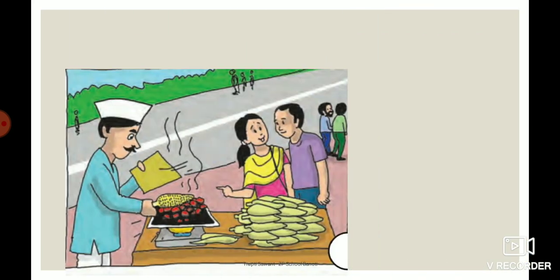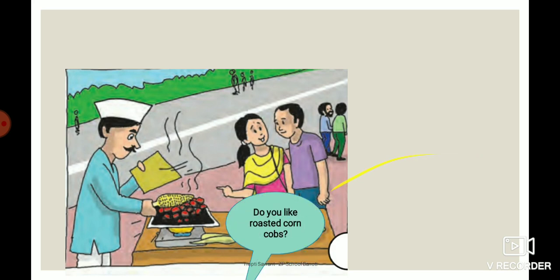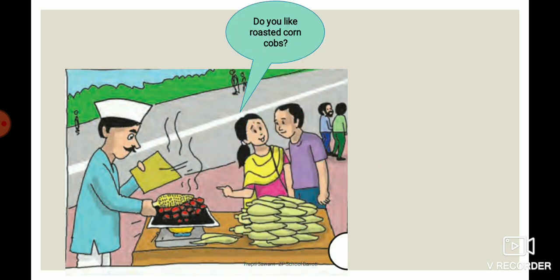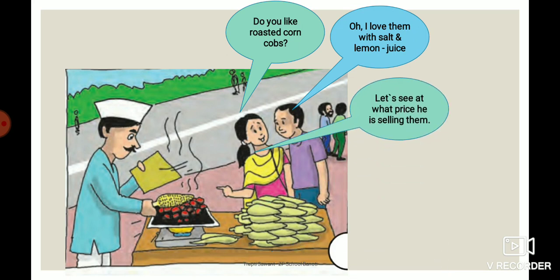See this picture very carefully and think about what they are talking to each other. She says, 'Do you like roasted corncobs?' He says, 'Oh, I love them with salt and lemon juice.' Then she says, 'Let's see at what price he is selling them.'